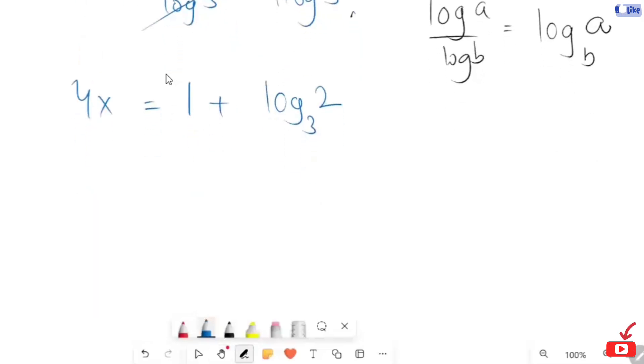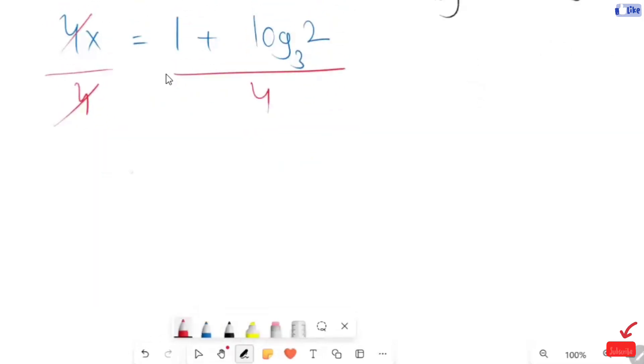Now, this 4 is going to be divided on both sides. So, the final value of x is 1 plus log base 3 of 2, all over 4. So, this is our final answer.